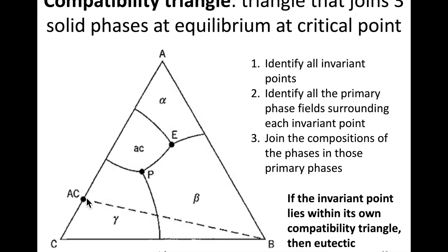The triangle formed by AC to A to B is the compatibility triangle for that region. The dashed line on the diagram already represents that compatibility triangle. We can do this for all invariant points on the diagram.